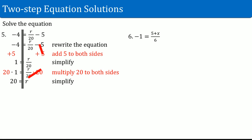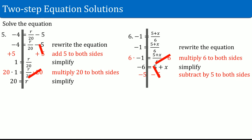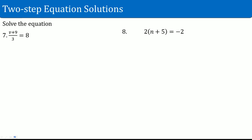Number six: negative 1 equals (5 + x) divided by 6. Rewrite the equation and draw a line straight down. What we have here is a divide by 6 as well as an add 5. The add 5 is stuck inside the fraction, so you cannot deal with the plus 5 first — you have to deal with the fraction. In this case, multiply by 6 on both sides. That cancels. On the left-hand side, 6 times negative 1 is negative 6. On the right-hand side, you are left with 5 plus x. Now you are adding 5 to x, so subtract 5. Negative 6 minus 5 is negative 11. What you have left on the right-hand side is just x.